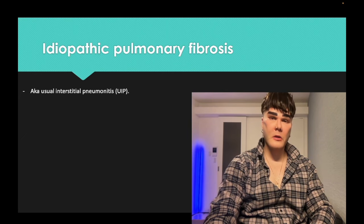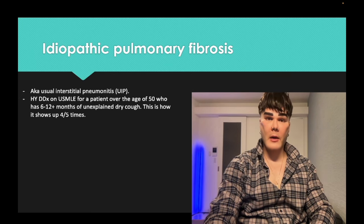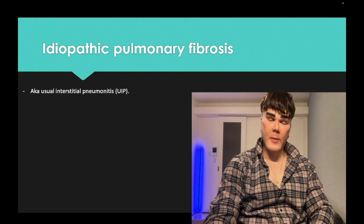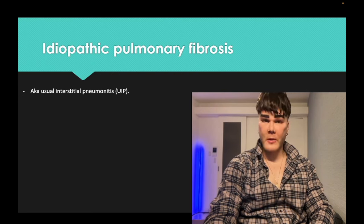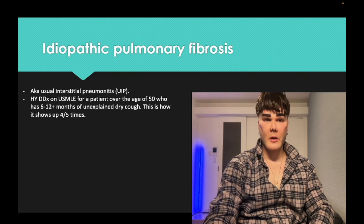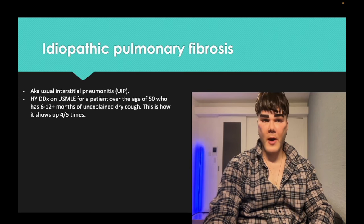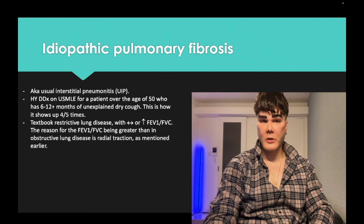also known as usual interstitial pneumonitis — UIP — shows up on the NBMEs twice. You'll get a vignette of idiopathic pulmonary fibrosis and you're looking for it as an answer, but UIP is listed. Four out of five times it's going to be a patient over the age of 50 with a six-to-twelve-month history of idiopathic dry cough — it's a high-yield differential.